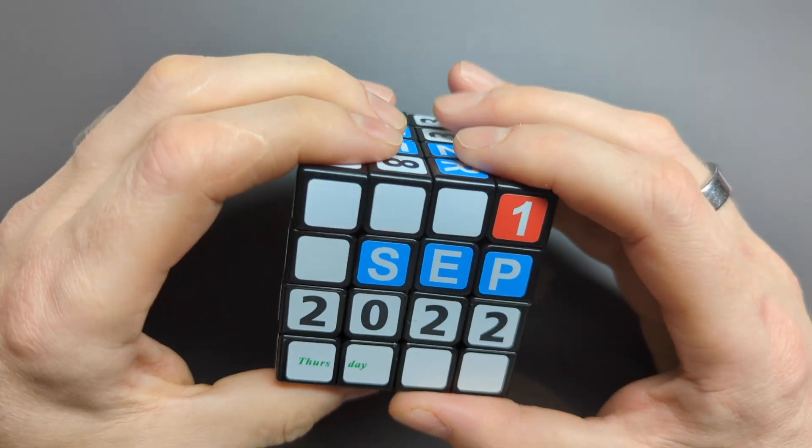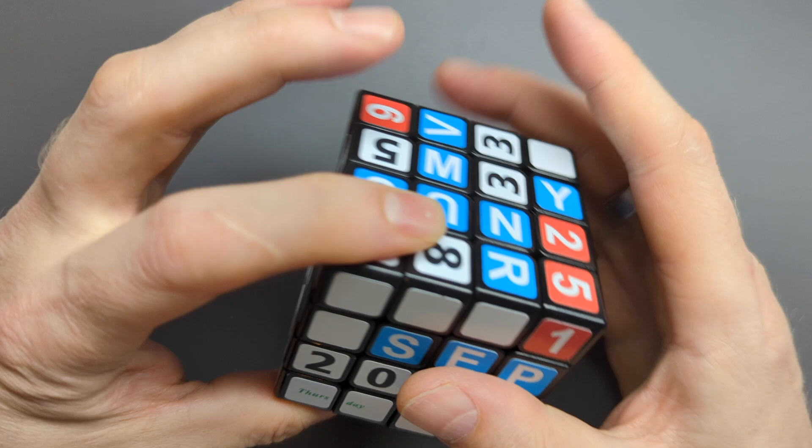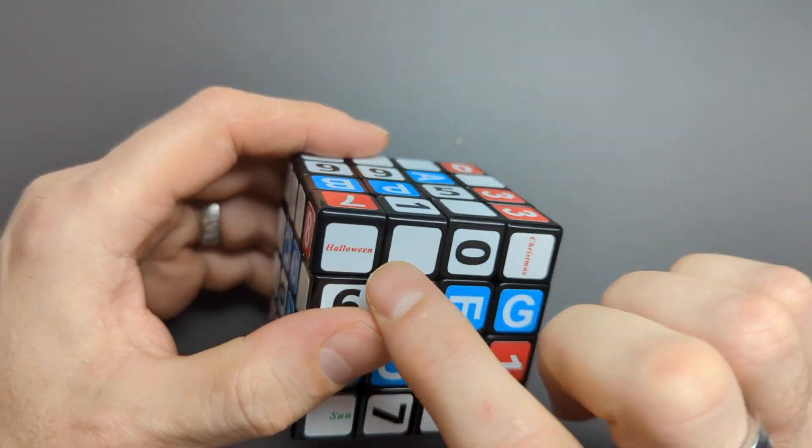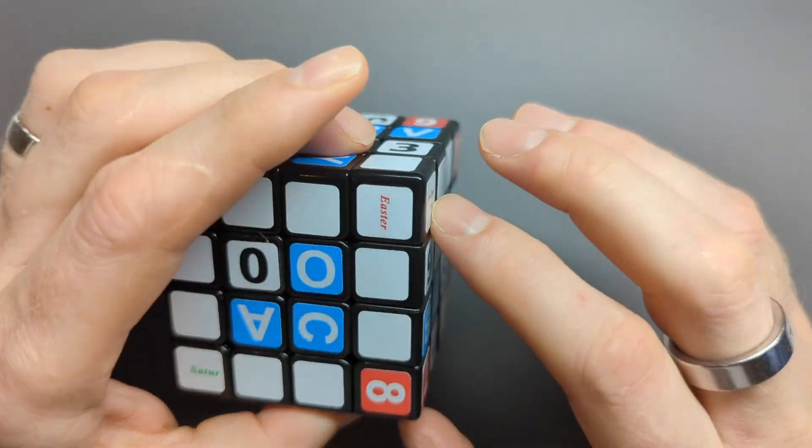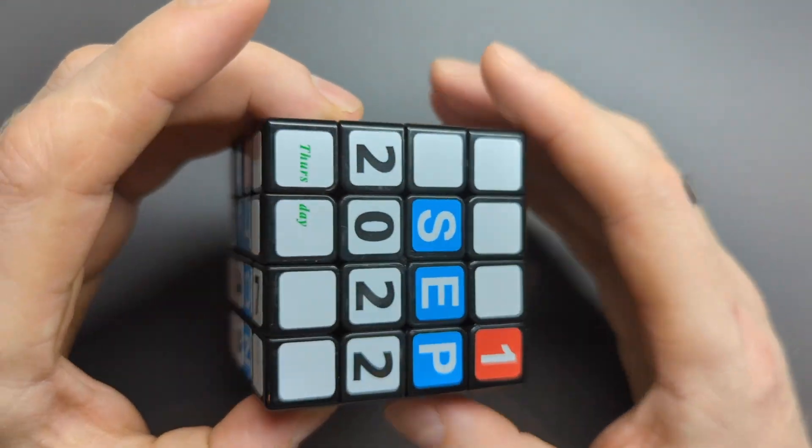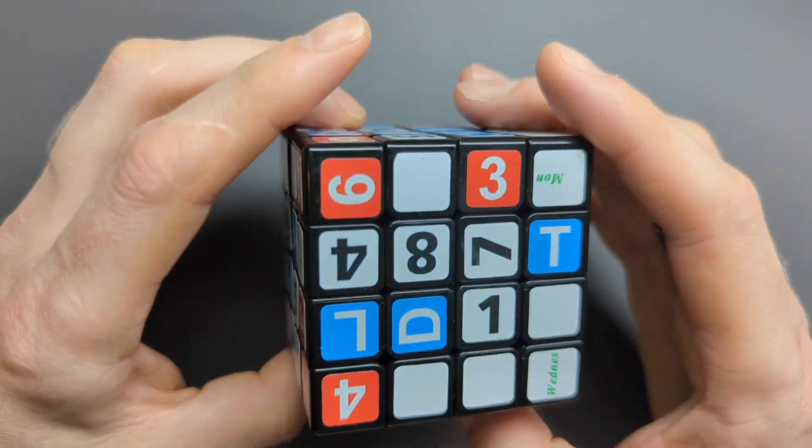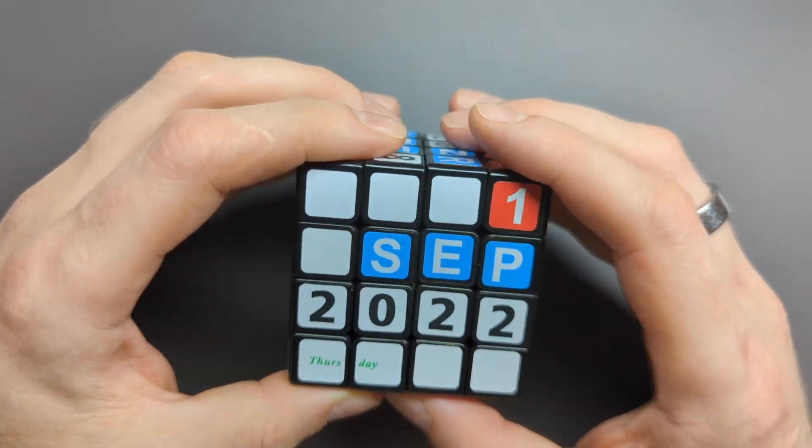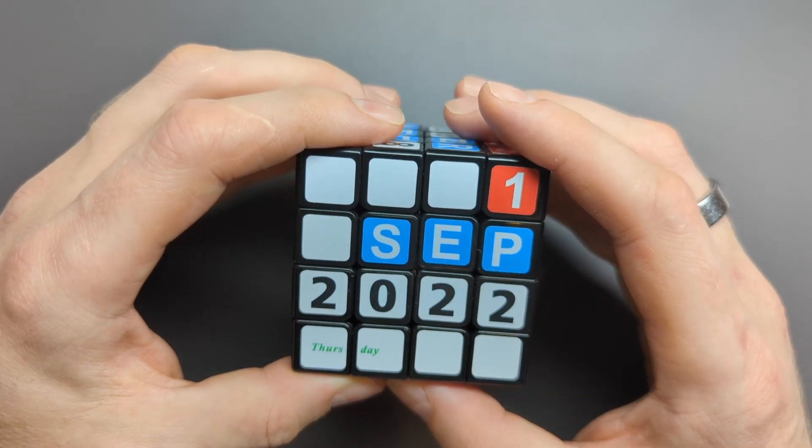Okay, so that's today: 1st of September 2022, Thursday. I was noticing the various other stickers—we had Christmas at the beginning. There's also a Halloween sticker, a New Year's Day sticker, and an Easter sticker. Is that everything? I guess that's everything. Yes, there we go. That's the 4x4x4 calendar cube.